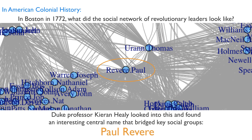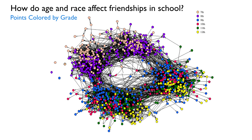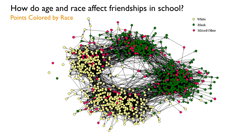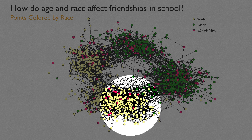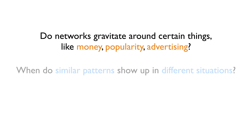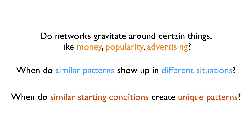Or in the topic of education, how are friendships in a school affected by race and age? In the data shown here, when we see friendships colored through grade level, it looks like there's pretty good diversity between students of different class years. But when we look through the same friendships colored through race, the friendships start to look much less diverse. If we combine this with data from other schools, we could see what patterns keep repeating even in different environments, and what makes unique patterns arise.